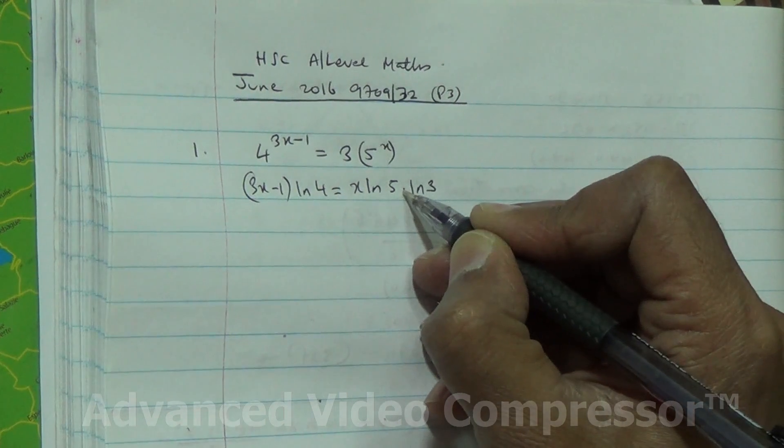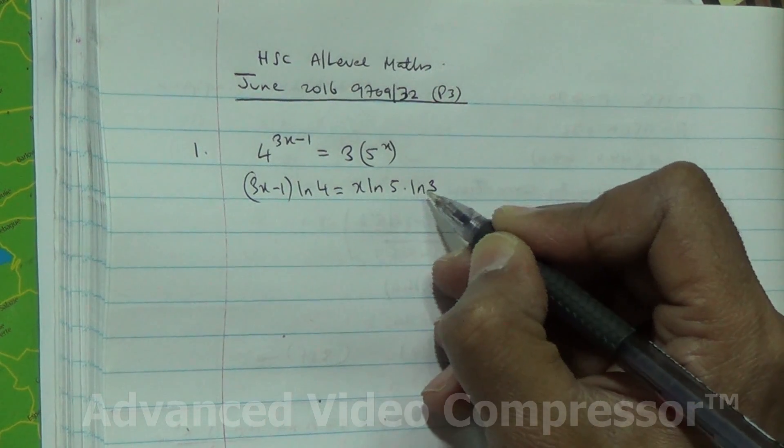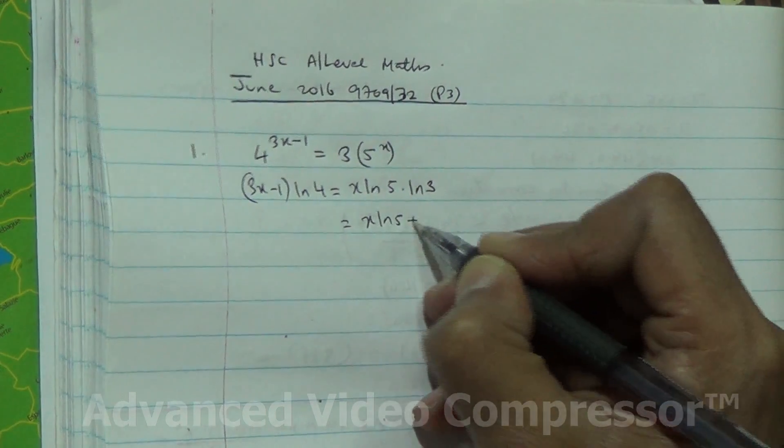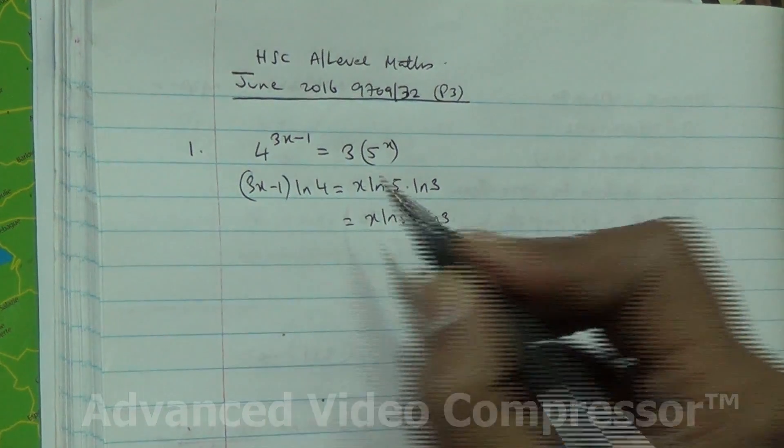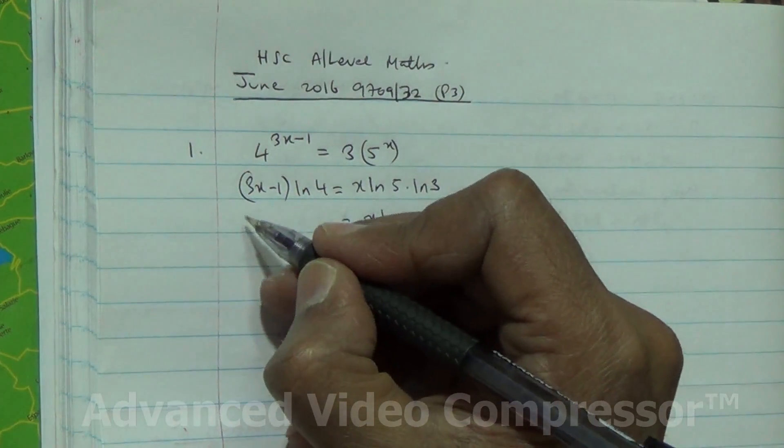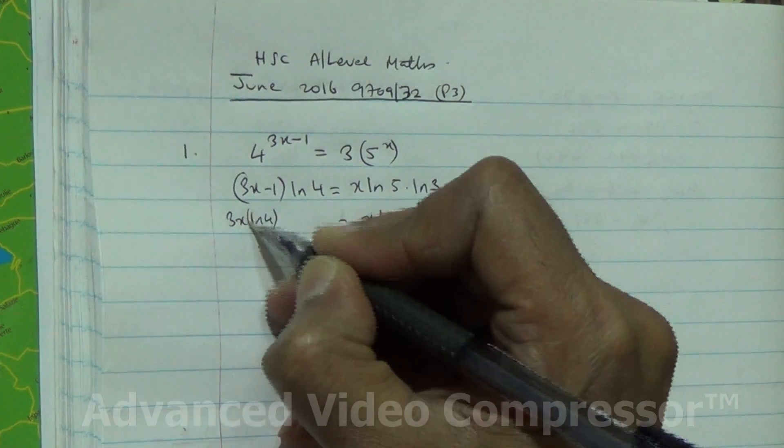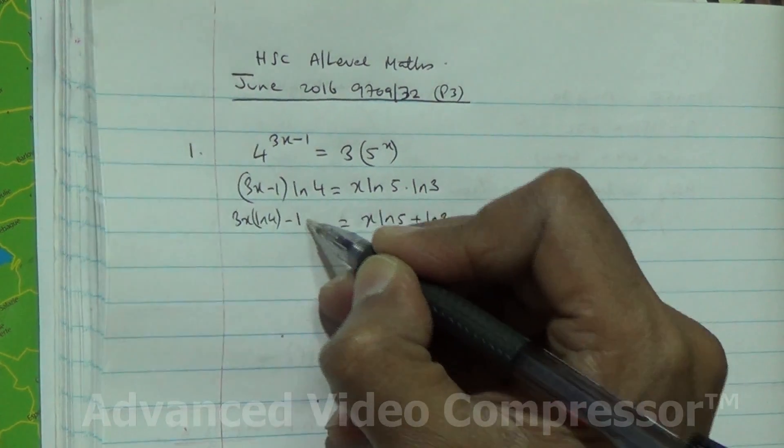And when we have multiplication, we use addition. So that's going to become x ln 5 plus ln 3. ln 4 times 3x is 3x ln 4, minus ln 4 times 1 is ln 4.